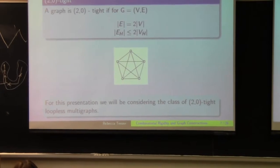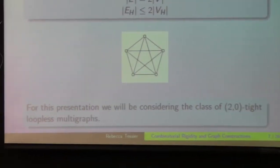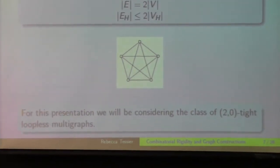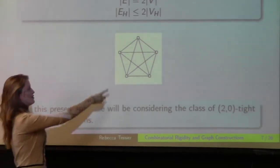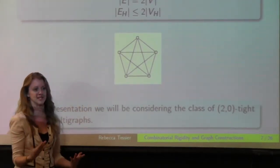As well for the remainder of the presentation, I'll be considering a class of 2-0-tight loop-less multigraphs. So for example, we could have K5 with a double edge here, but we couldn't have one of these vertices.